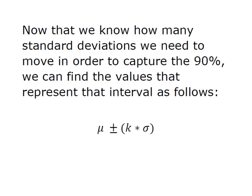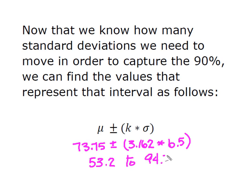So now that I know how many standard deviations we need to move in order to capture that 90%, we can find the values that represent that interval. So we're simply going to start at the mean, which is 73.75. And we're going to move to the right, which is plus, and to the left, minus. And we just solved for k a second ago as 3.162. The question told us the standard deviation was 6.5 years. So I'm going to take 73.75 plus this, 73.75 minus this. And I'm going to end up with an interval that looks like 53.2 to 94.3 years.